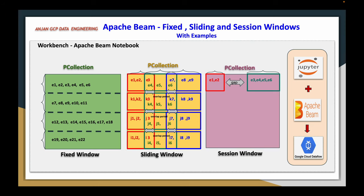The third case is session windows. For example, consider a user who has logged into some website and is performing some activities. He performs certain activities and then is idle for some duration — let us say 10 minutes. His activities are available within this window; he has performed 2 activities. Now after being idle for 10 minutes, he again performs more activities — 3 or 4 activities. That means this window duration is not fixed at all; it completely depends on his activities.